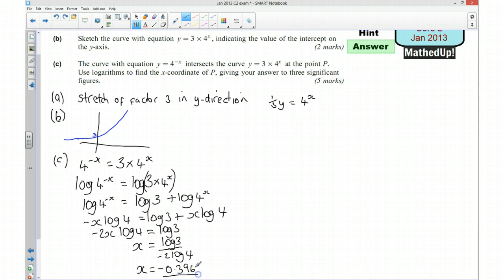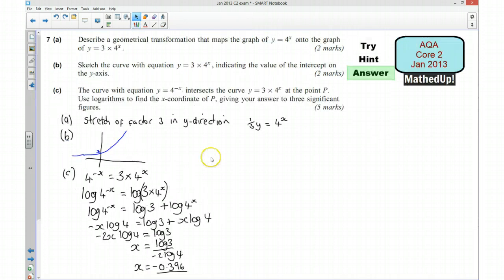And there you go. If I just tidied this up a little bit. Remember, you can check your answer because I could check that 4 to the negative power of this is the same as 3 times 4 to the power of this. So I can check that out and see whether that's actually true. And we only wanted the x coordinate. If we wanted the y coordinate as well, I could substitute this into here and find what the y coordinate is as well.